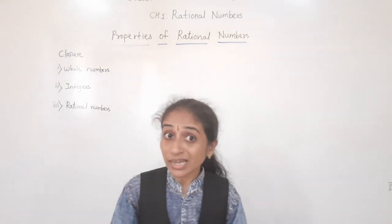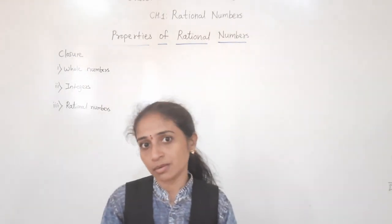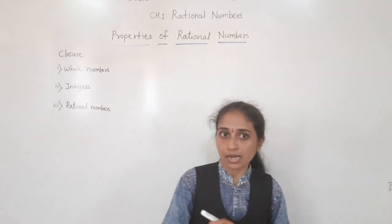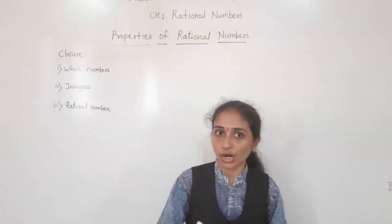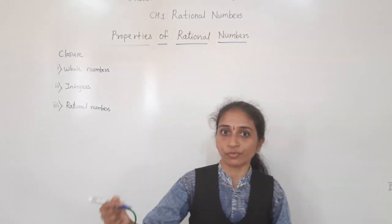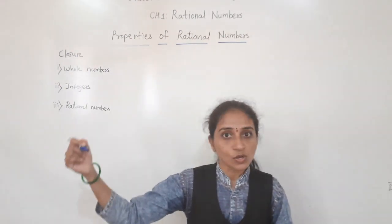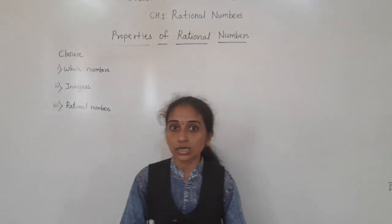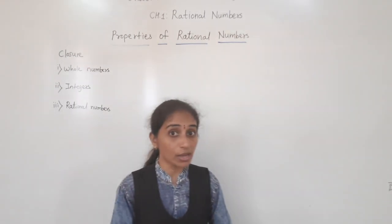What are the natural numbers? The numbers which we start from 1, 2, 3, 4, 5 and so on — these numbers are called natural numbers.